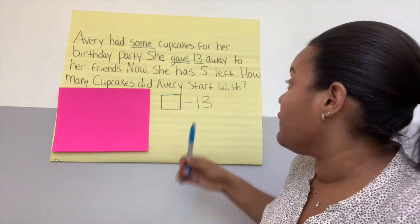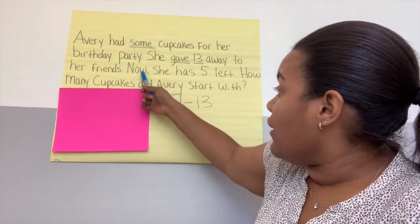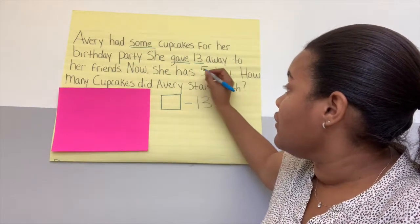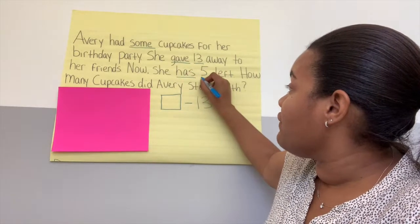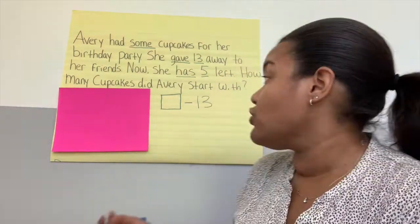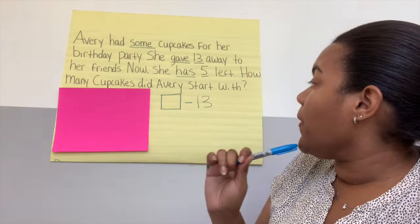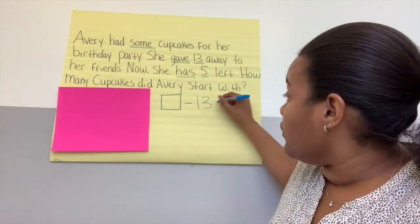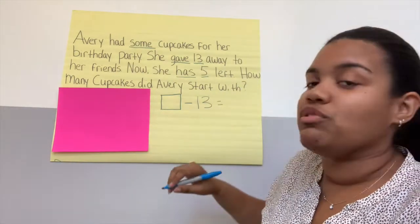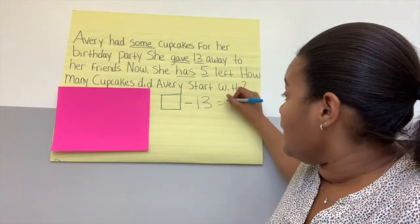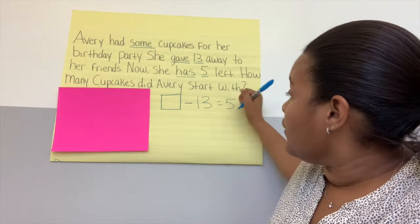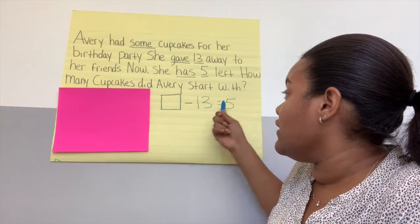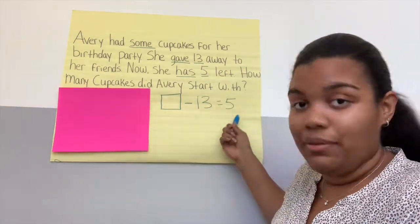And then we're going to continue to read. Now she has five left. So what do we need to do? What should we put here? Good — equals. Equals what? Correct, it equals five. So something minus 13 equals five cupcakes.